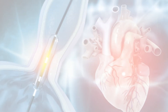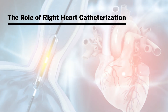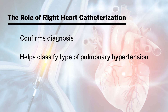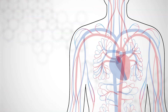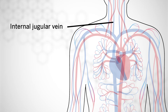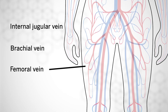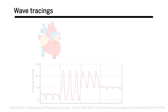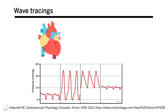An echocardiogram is very helpful for suggesting pulmonary hypertension, but a right heart catheterization is the way we confirm the diagnosis. Not only does it confirm the diagnosis, it can help classify the type of pulmonary hypertension and help guide therapy. A right heart catheterization is typically performed through venous access — either through the internal jugular vein, brachial access, or femoral access. The position of the Swan-Ganz catheter is confirmed via wave tracings, as seen on screen, as well as by fluoroscopy imaging.